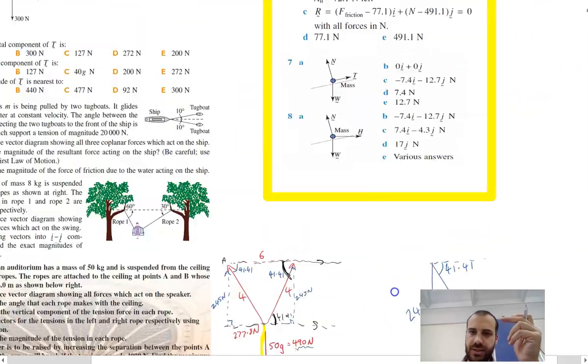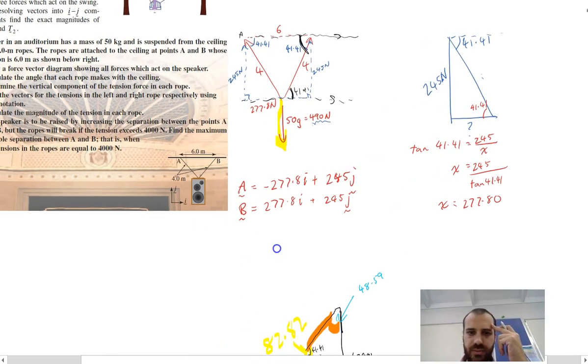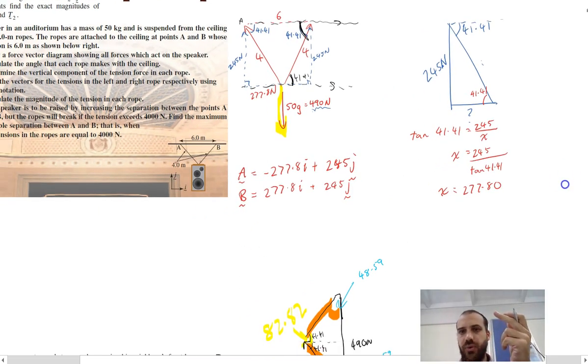Now, I think if I look at the answers, it gives 278. So they're just doing some rounding there, or I've done some rounding when I did that angle of 41.41. But that's close enough.